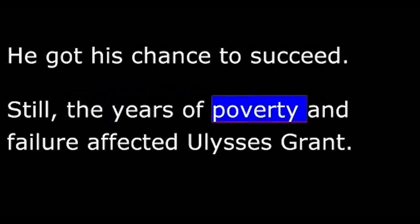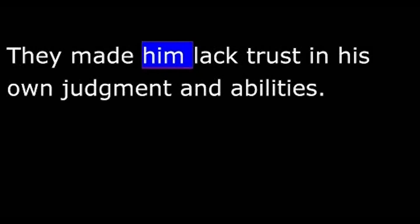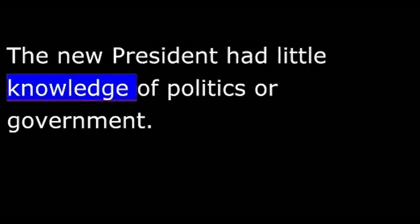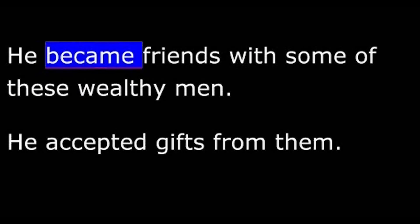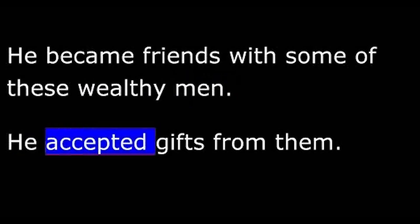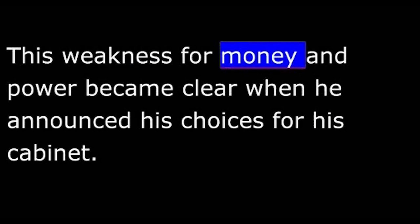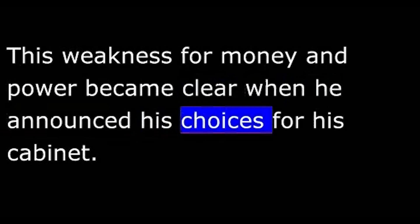Still, the years of poverty and failure affected Ulysses Grant. They made him lack trust in his own judgment and abilities. This feeling showed itself when Grant reached the White House. The new president had little knowledge of politics or government, and he refused to ask for advice from experts. To do so, he felt, would show a lack of intelligence. For advice, he depended on close friends — the men with whom he had served during the Civil War. Grant had never been able to make much money. He liked and had great respect for men who had. He became friends with some of these wealthy men and accepted gifts from them.